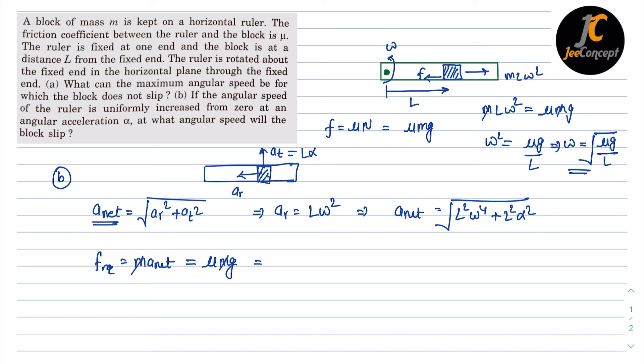So the a net value under root l square omega power 4 plus l square alpha square should be equal to mu times g. If we square both sides, this will become l square omega power 4 plus l square alpha square is equal to mu square g square.